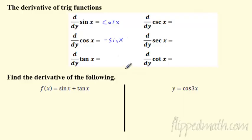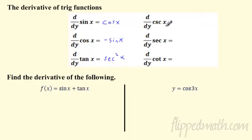Now let's do the weird ones — all six trig functions. I'm not going to prove all of these; I'm just going to give them to you. Tangent gives you secant squared x. The way I remember this: where do you like to get a tan? By the sea — secant squared. That's rough, but as long as you remember it. Cosecant is going to give you negative cosecant cotangent. Secant is going to give you secant tangent.